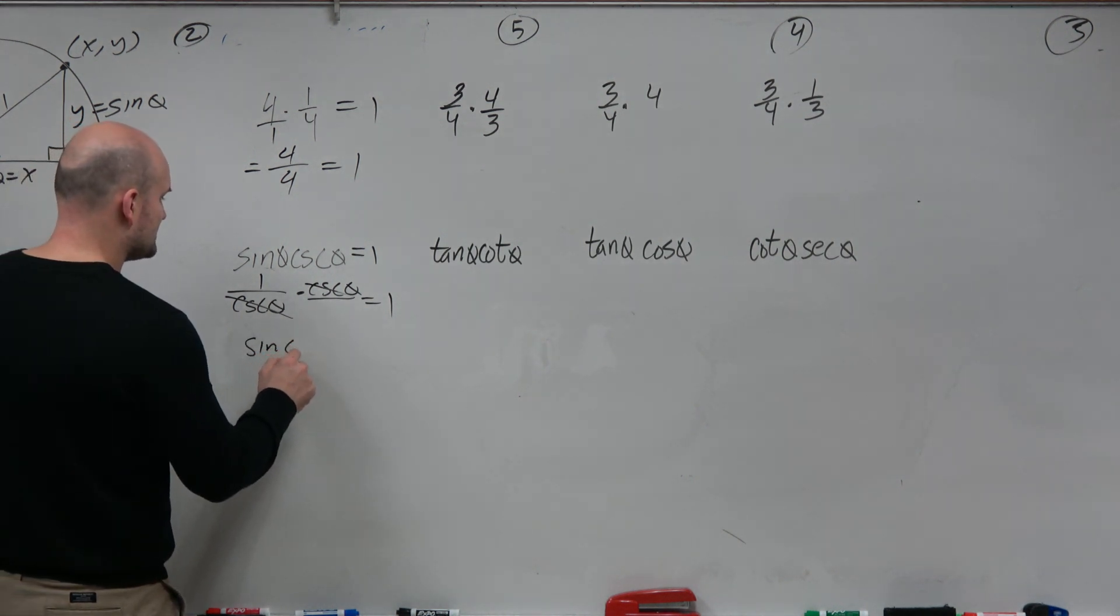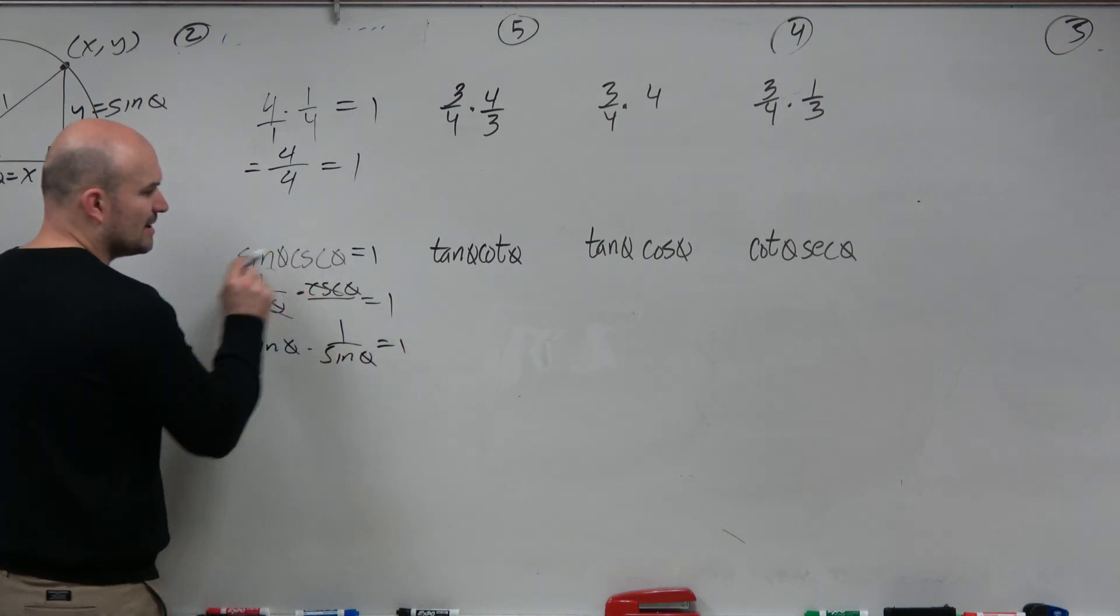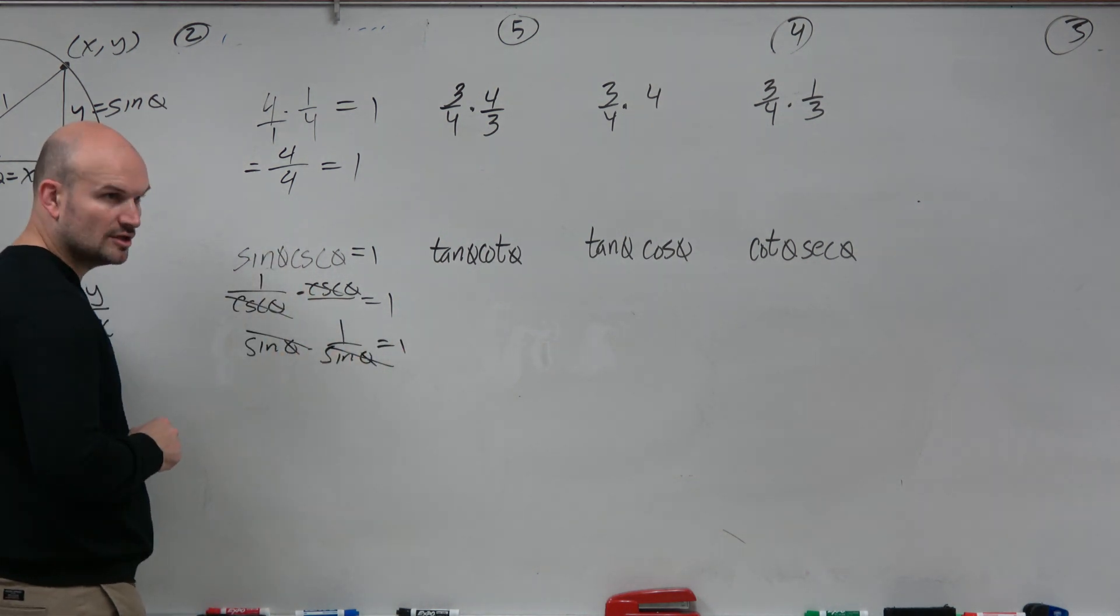Cosecants divide out. That leaves you with 1. Or some people say, well, I like to write things in terms of sines. So I'm going to rewrite cosecant as 1 over sine. Divide out equals 1.